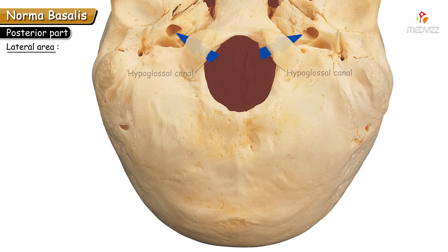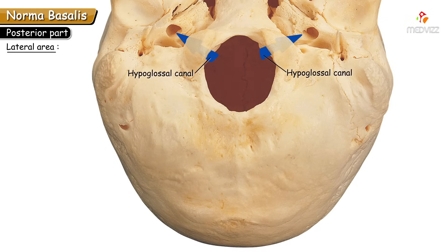The hypoglossal canal is associated with the occipital condyles — it is located anterior to the occipital condyles and is difficult to identify from the basalis view. It transmits the hypoglossal nerve (12th cranial nerve). Its internal opening can be seen along the margins of the foramen magnum in the posterior cranial fossa.